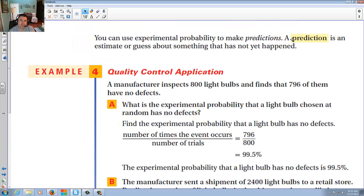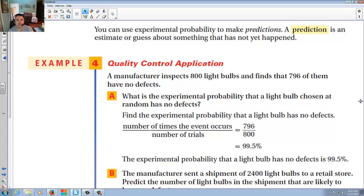You can estimate probability to make predictions. A prediction is an estimate or guess about something that has not yet happened. For instance, a manufacturer inspects 800 light bulbs and finds that 756 have no defects. Now understand that if you check something more than 50 or 100 of them, you probably have a very good idea of what the ratio is going to be, other than an odd bad batch or something like that. You have a pretty good idea. So what you do is you take the 796 divided by the 800, and you'll find that out of your sample size, 99.5% were good to go. Only 0.5% were bad.